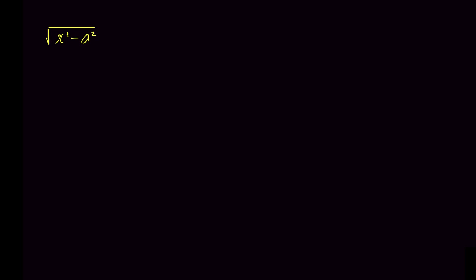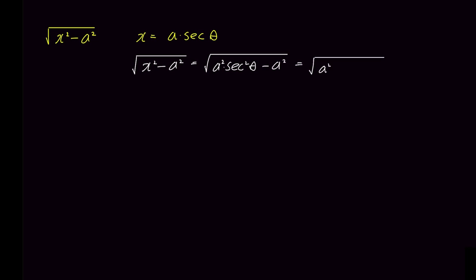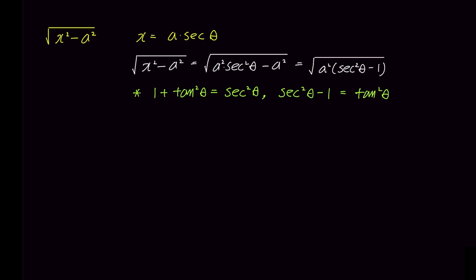Similarly, for the expression square root of x squared minus a squared, since there is a minus sign inside the root, we substitute x with a secant theta. The square root of x squared minus a squared becomes the square root of a squared times secant squared theta minus a squared. Factoring out a squared gives a squared times secant squared theta minus 1. Using the identity 1 plus tangent squared theta equals secant squared theta, secant squared theta minus 1 simplifies to tangent squared theta, and the root becomes a times tangent theta.